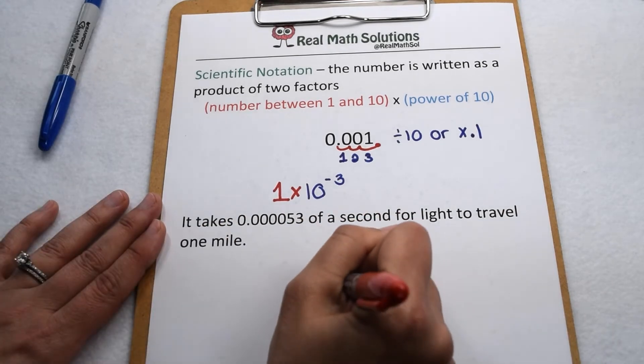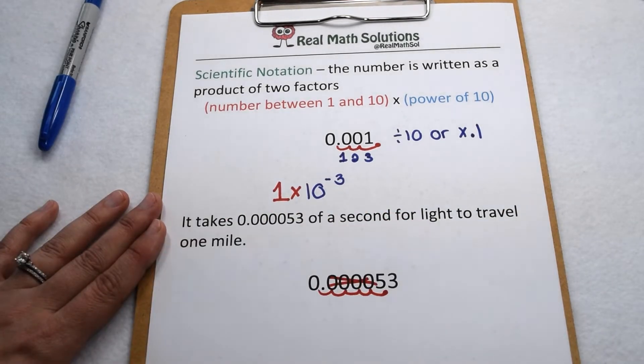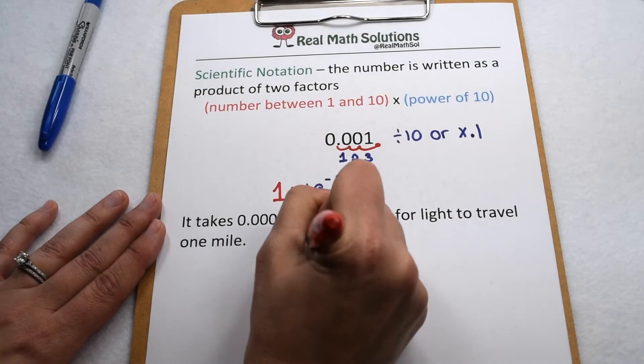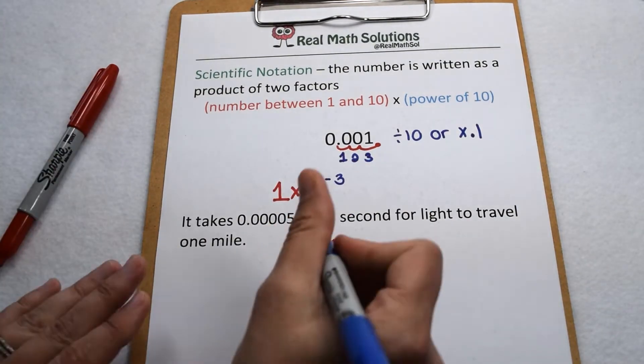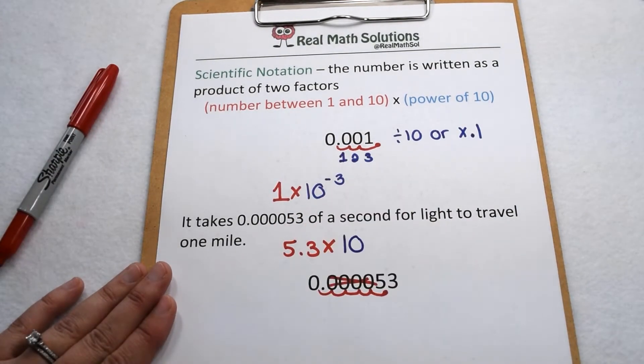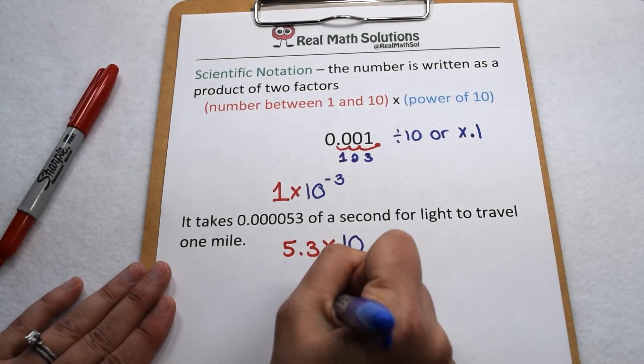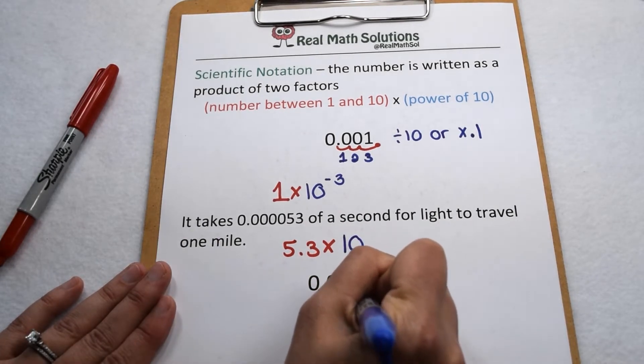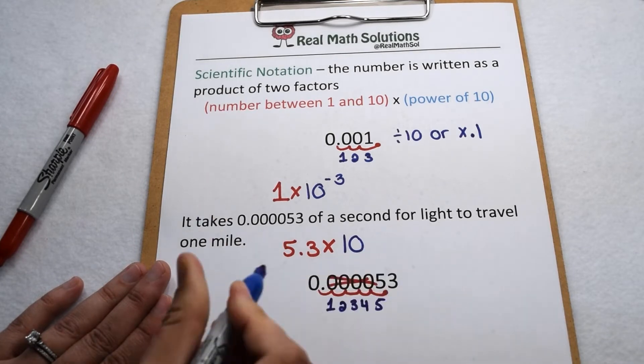When we do that we can drop our zeros because now they're not significant and our first factor would be 5.3. That 5.3 is going to get multiplied by a power of 10. If we look we see we moved our decimal 1, 2, 3, 4, 5 times.